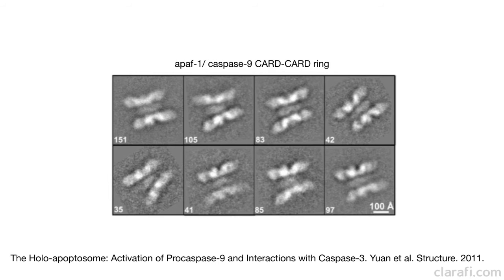An electron density map of the apoptosome showed a structure that was the size of the card-card ring that bound asymmetrically on the base of the apoptosome, consistent with the second model.